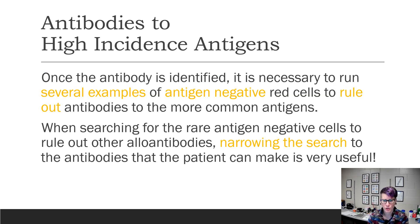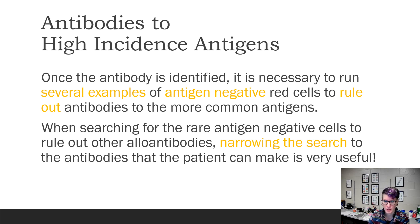Once you determine what the antibody is to, you'll have to find more antigen-negative cells so that you can perform rule-outs to all the common antigens. If you perform phenotyping or genotyping, this is very useful because you can just focus on the antigens that the patient is negative for.